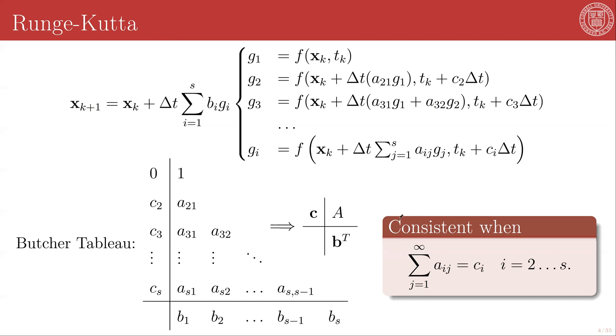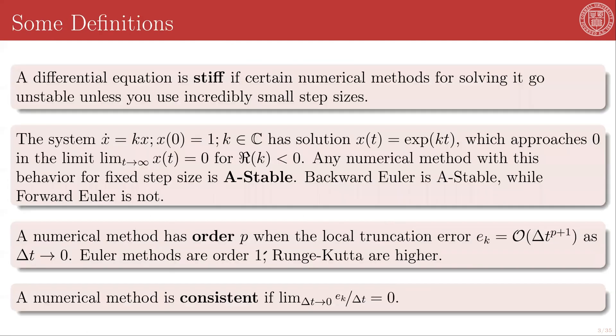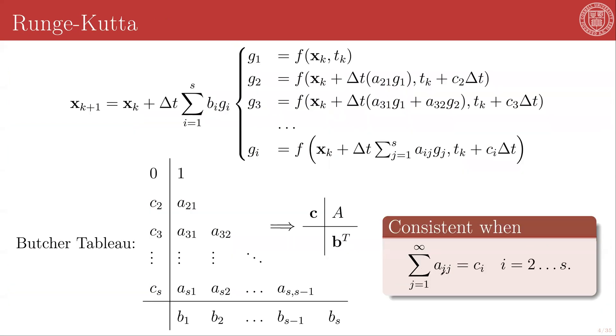A Runge-Kutta method is consistent. And recall that consistency is the condition where the limit of the local truncation error divided by the time step goes to zero as the time step goes to zero. In the case where the sum from j=1 to however many of the A's you have of A_{ij} is equal to c_i for i being 2 to s.